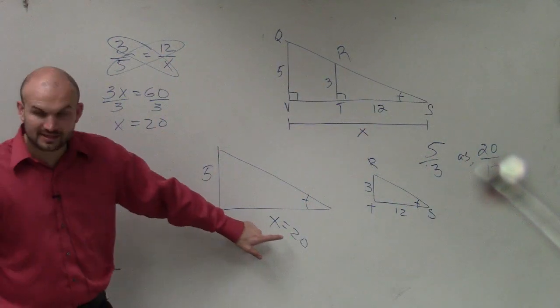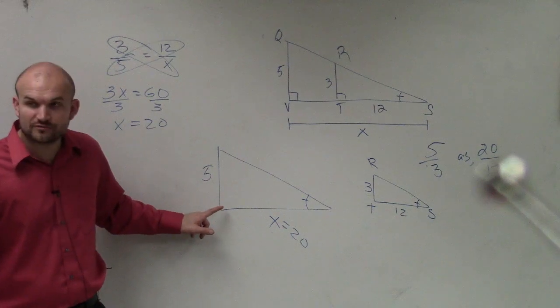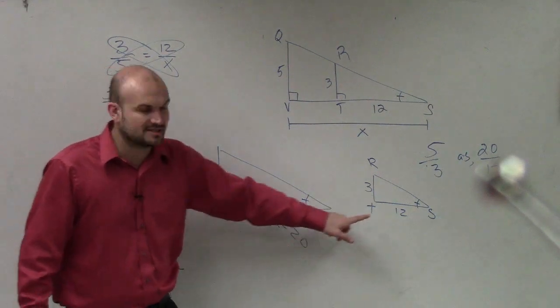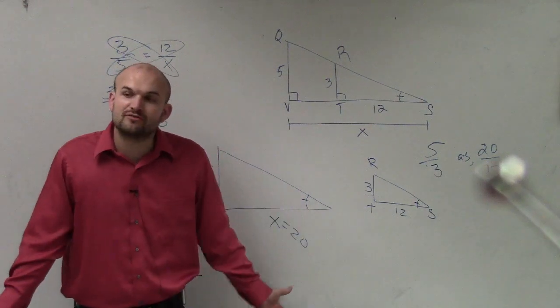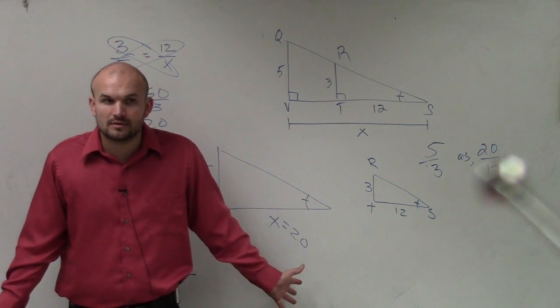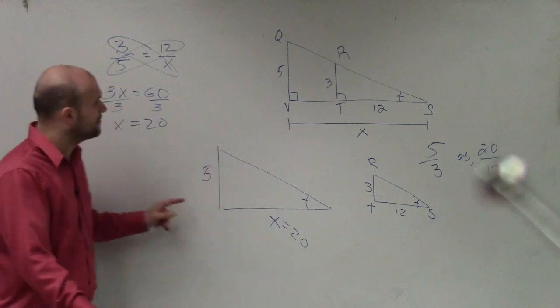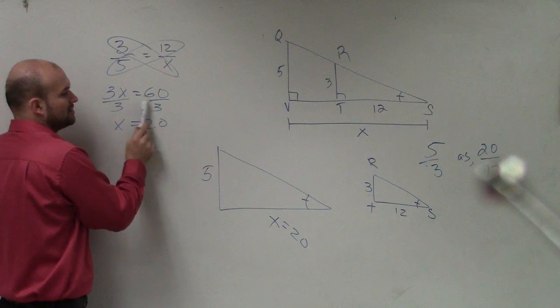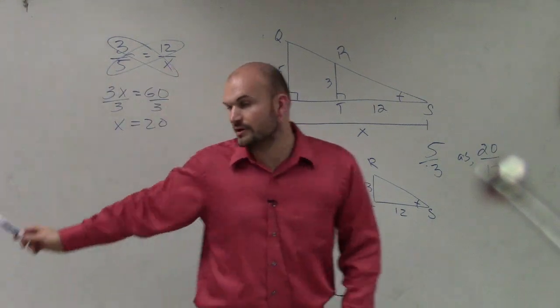So what I did, this length is 20. So I wrote a proportion for the side lengths. Is 5 is to 3 as 20 is to 12? Are those equivalent proportions? I found x, I created a proportion, used cross multiplying, and then solved for 20 right here.